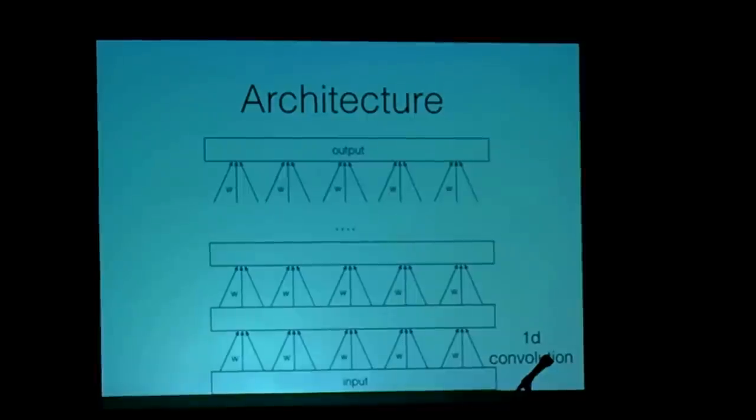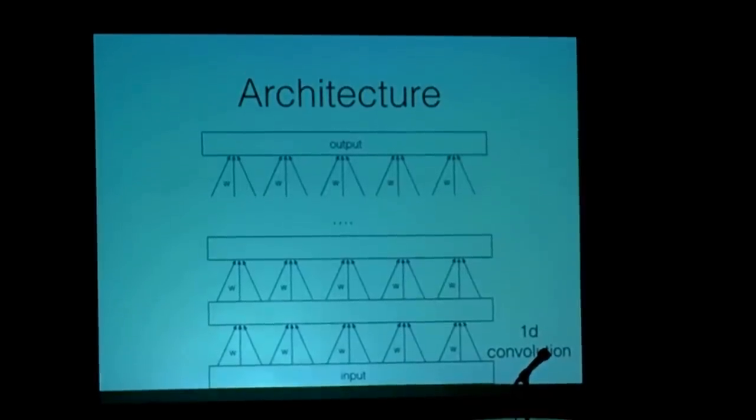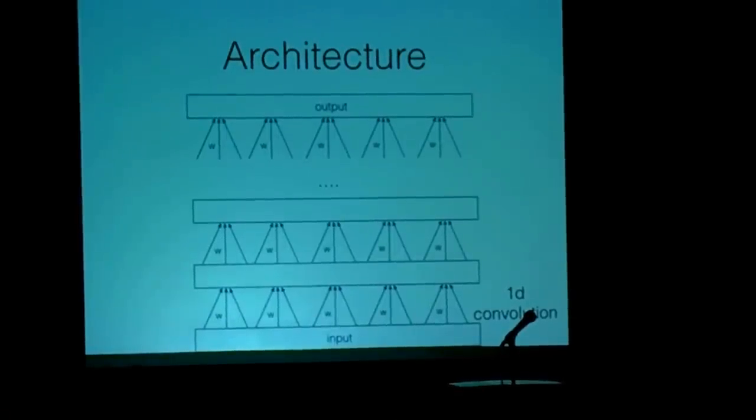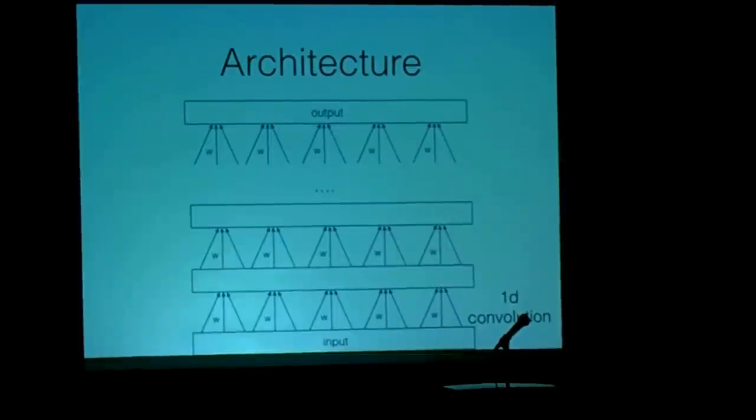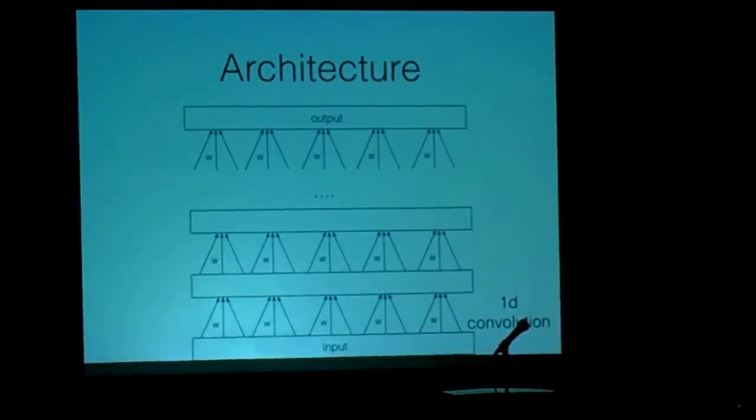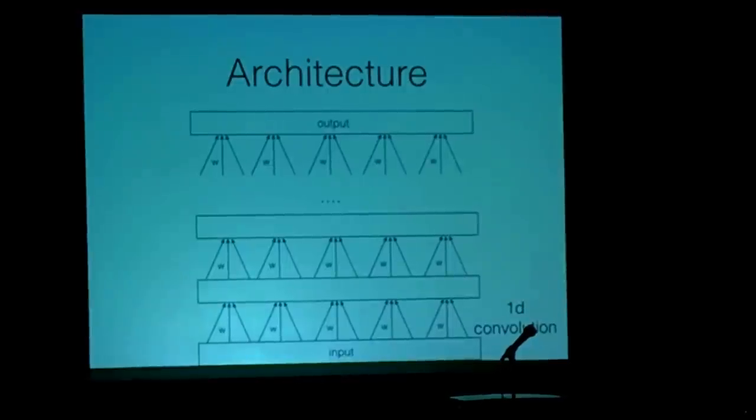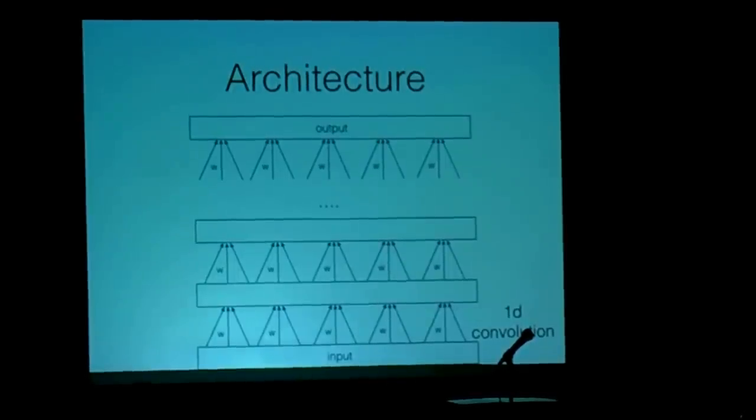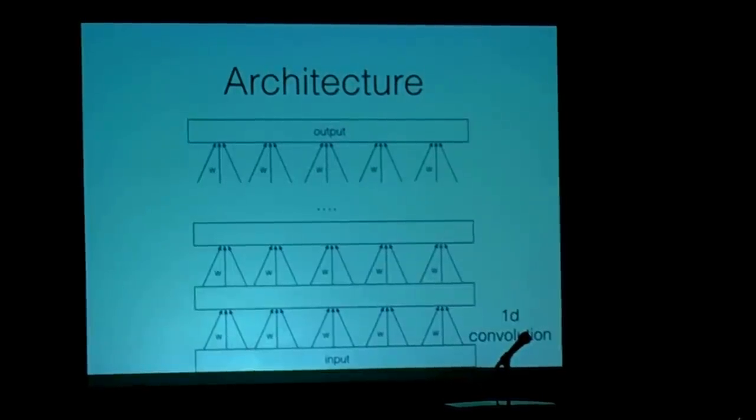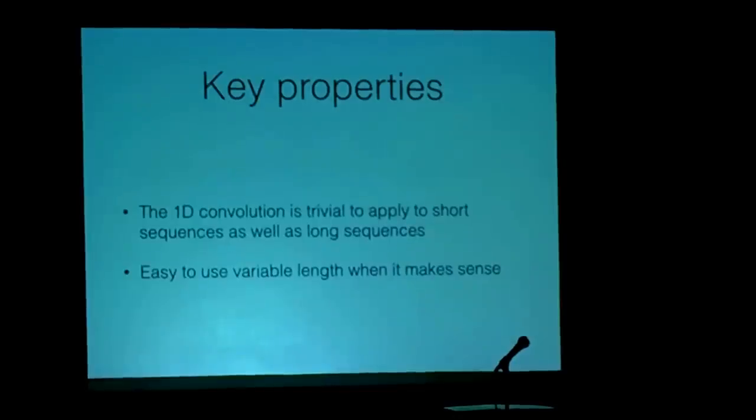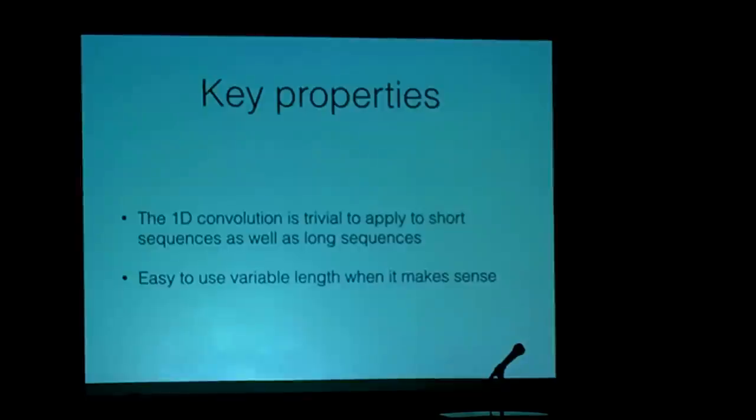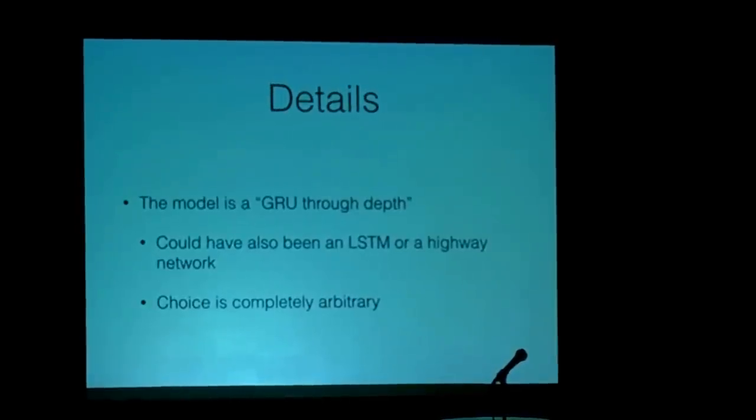Now this model has, so one of the key properties that you would like from neural networks that try to learn algorithms is that they should be able to generalize to large problem instances from small problem instances. This model has a chance of doing so because the convolutional operation naturally extends. And if you increase the depth appropriately, the model will have a chance to perform the necessary computation. And of course it also has a nice property that one-dimensional convolutions can be implemented extremely quickly.